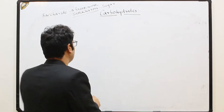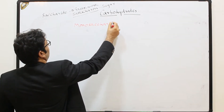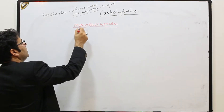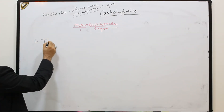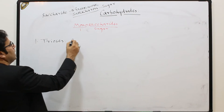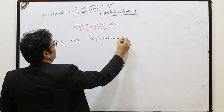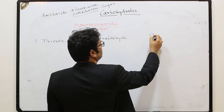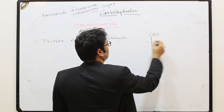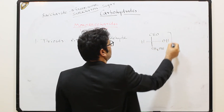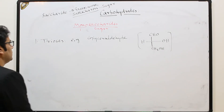Let me start with monosaccharides, which means one sugar molecule. The first type is trioses. The example is glyceraldehyde. Its formula is CHO at the top (aldehyde group), then CH-OH, and CH2OH at the bottom — this is the chemical formula for the triose, glyceraldehyde.